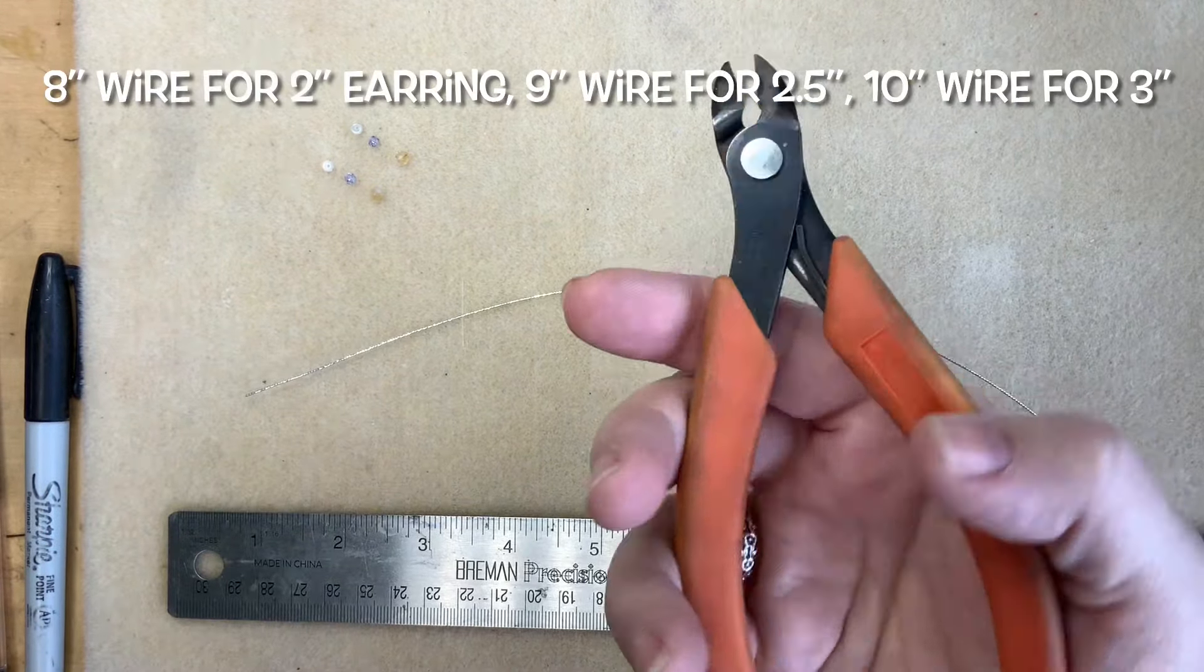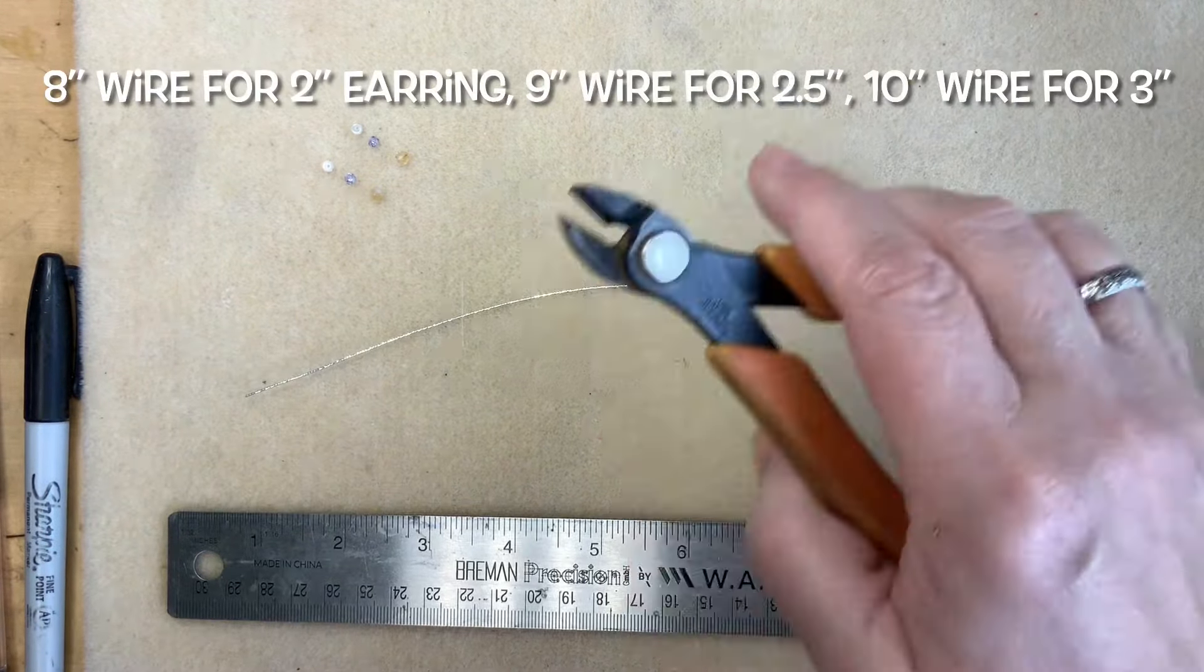You will also need a pair of cutters, and I'm going to cut this 10 inch piece in half now at 5 inches. Make sure they're the same size. They're just a tiny bit off. It's not a big deal.